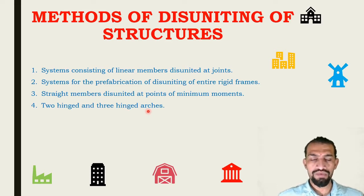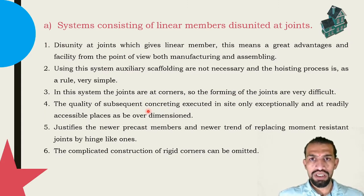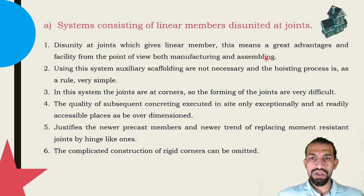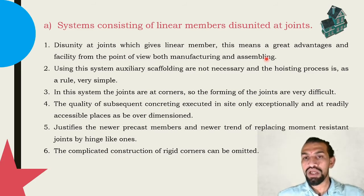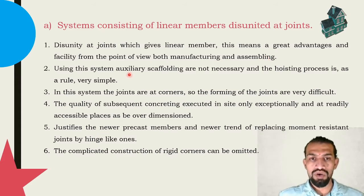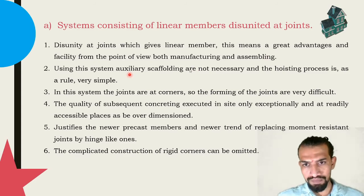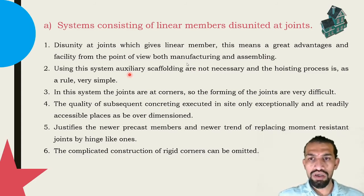Systems consisting of linear members disunited at joints: disuniting at joints gives linear members great advantages and facility from the point of view of both manufacturing and assembling. This means at normal joints — such as where a beam rests on a column and a slab rests on the beam — we get the particular joint. Using this system, auxiliary scaffolding is not necessary and the hoisting process is, as a rule, very simple.